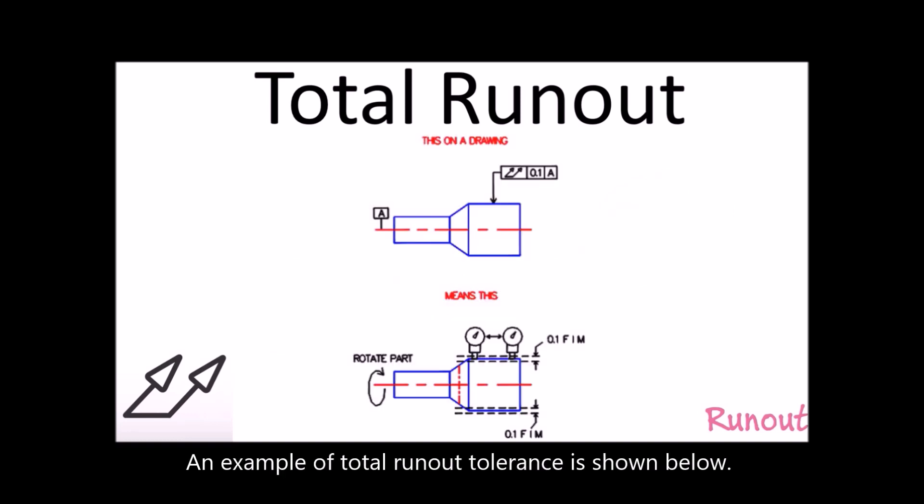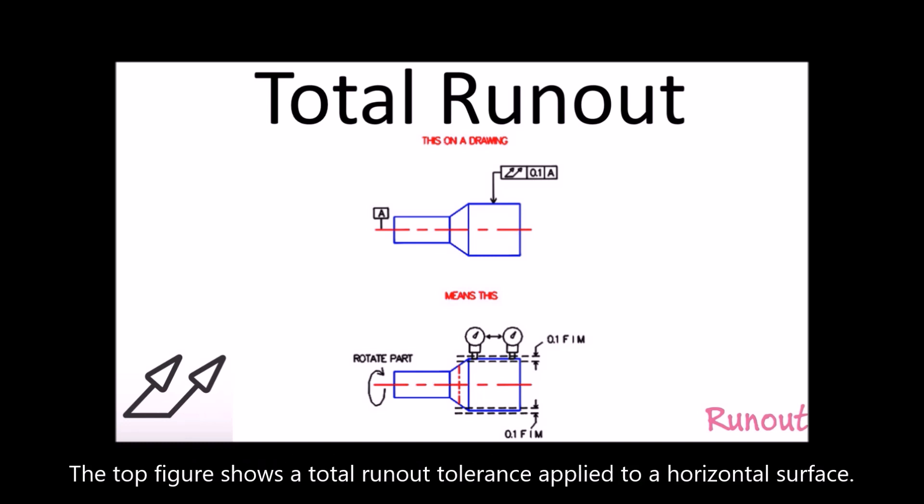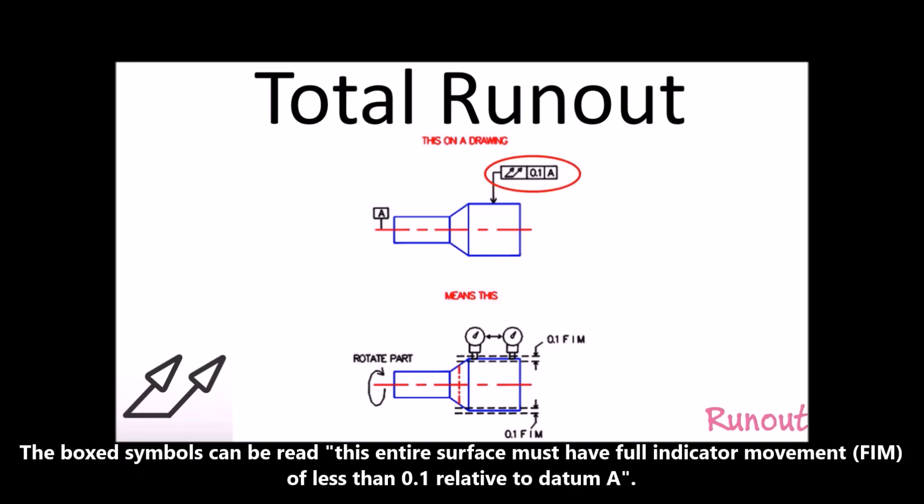An example of total runout tolerance is shown below. The top figure shows a total runout tolerance applied to a horizontal surface. The boxed symbols can be read: this entire surface must have full indicator movement of less than 0.1 units relative to datum A.